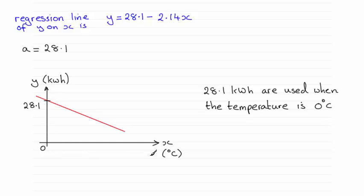So when the temperature is 0 degrees Celsius, the energy used is 28.1 kilowatt hours. Okay.